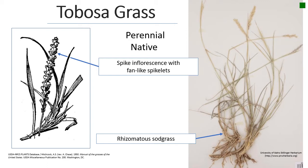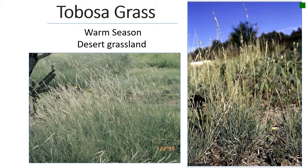Tobosa grass is a grass we find in the southwest. It's pretty nondescript — kind of a gray color — but its flowers are unique because they're fan-like; when you zoom into the floret you'll see each one is fan-shaped. It's rhizomatous, so it forms large sods. It's just a gray, sage-colored grass forming clumps of sod grass in the southwestern desert.